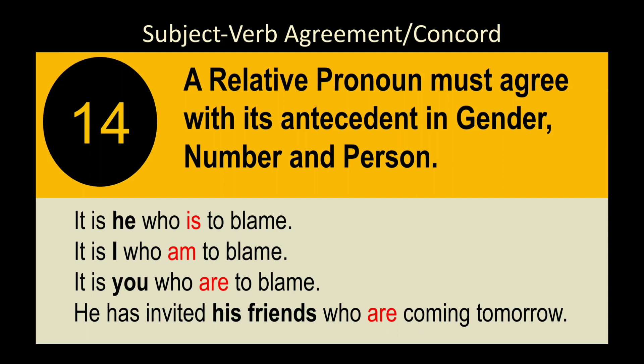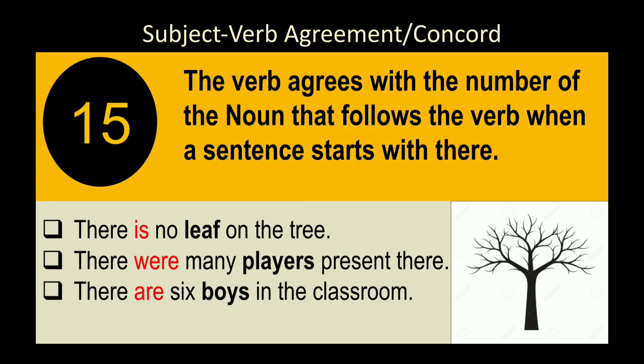Rule 16: A relative pronoun must agree with its antecedent in gender, number, and person. The verb after a relative pronoun ('who,' 'which,' etc.) agrees with the antecedent — the word just before the relative pronoun. Examples: 'It is he who is to blame.' 'It is I who am to blame.' 'It is you who are to blame.' 'He has invited his friends who are coming tomorrow.'